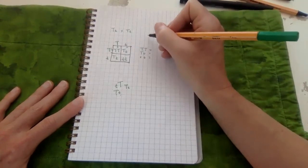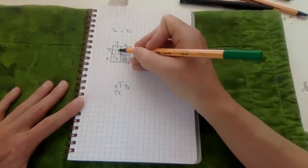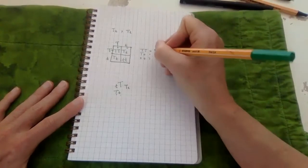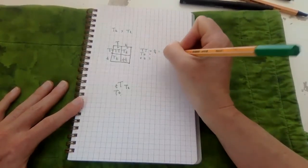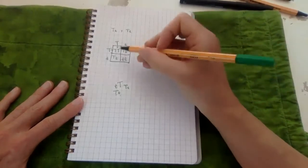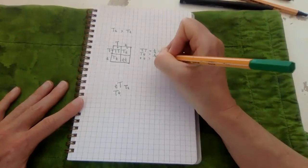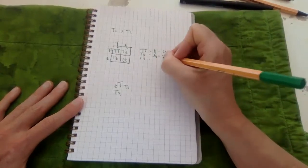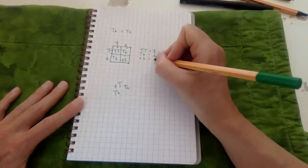That is 25 percent. Capital T lowercase t: we've got two out of the four, four is always going to be our denominator, that is 50 percent. Lowercase t lowercase t: that is one out of the four, 25 percent.